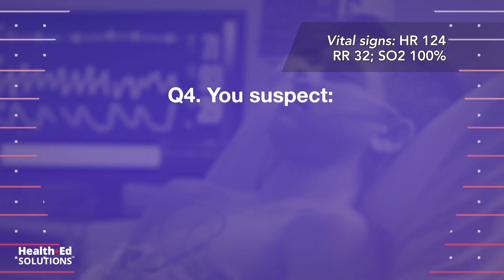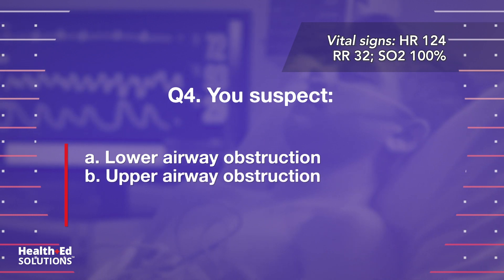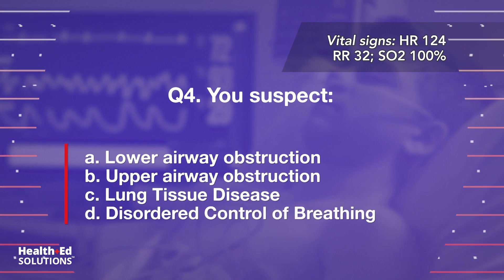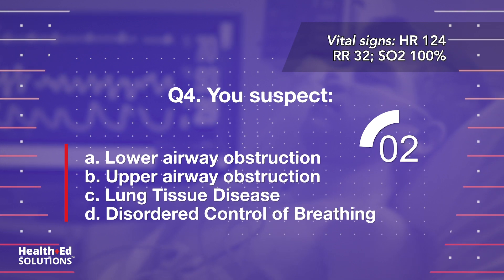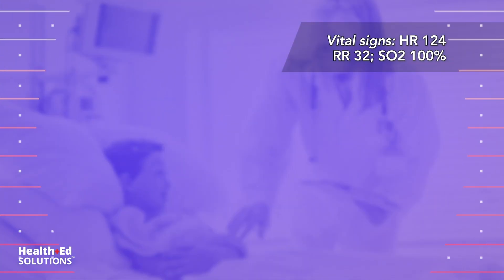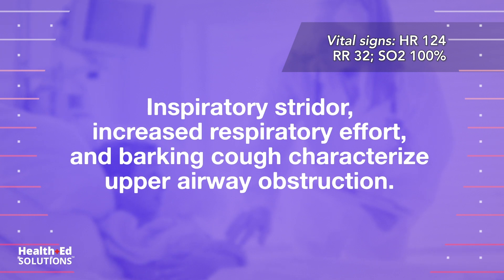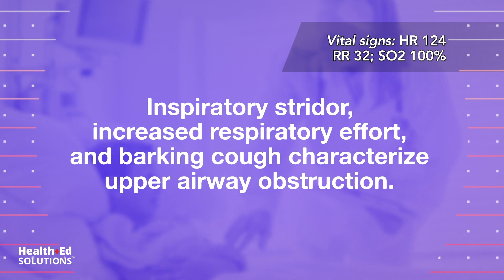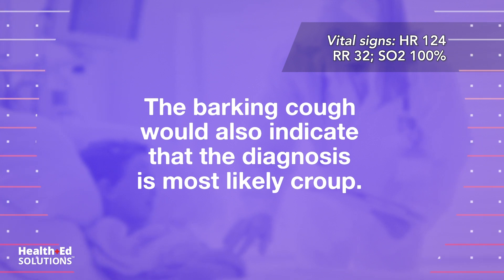Question 4: You suspect: A) lower airway obstruction; B) upper airway obstruction; C) lung tissue disease; D) disordered control of breathing. Correct answer B — upper airway obstruction. Inspiratory stridor, increased respiratory effort, and barking cough characterize upper airway obstruction. The barking cough would also indicate that the diagnosis is most likely croup.